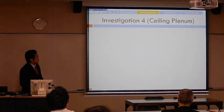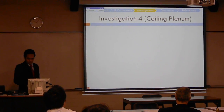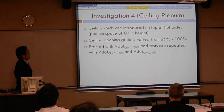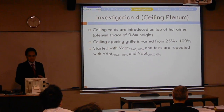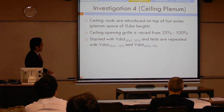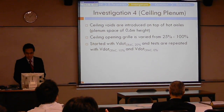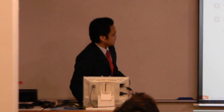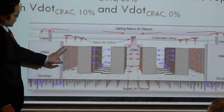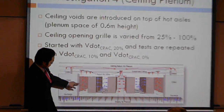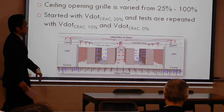Investigation 4 is all about the construction of ceiling vents. The ceiling vents are introduced on top of the hot aisle with the opening ratio ranging from 25% to 200%. Similarly, I started with CRAC units at 20% extra airflow and repeated that with 10% and 0% extra. This is the illustration — we have the data center with the ceiling, so hot air can easily get up on top, straight above the hot aisle.